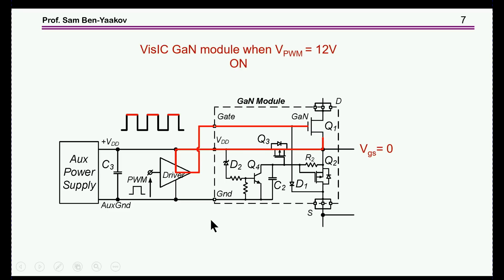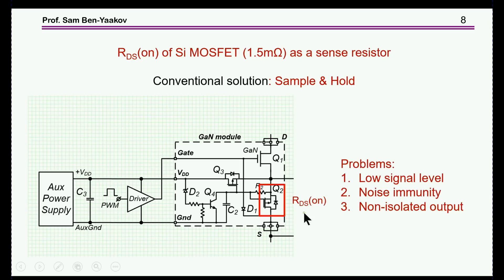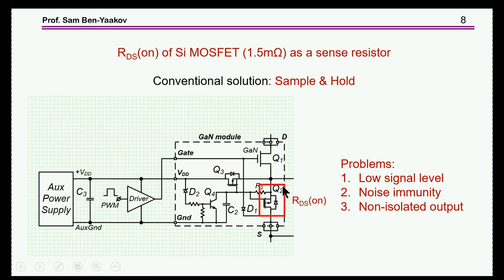This arrangement translates a regular PWM gate driver signal of 0 to 15 volts into the required level for the GAN transistor. During operation with auxiliary power supply, the silicon transistor Q2 is conducting — it is not switching, just on all the time, allowing the GAN current to pass through. This unit can therefore be used as a sensor by looking at the voltage across the RDS(on) of the transistor. This is a conventional way of measuring current: the voltage across RDS(on) is sampled and held on a capacitor, then processed to get the needed information.